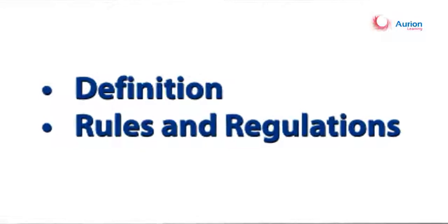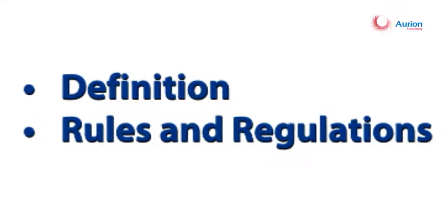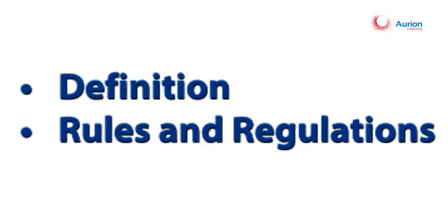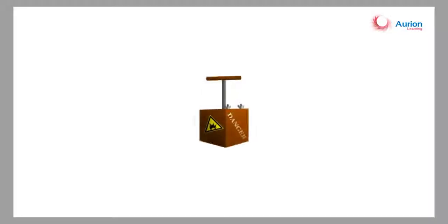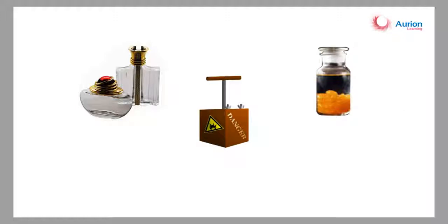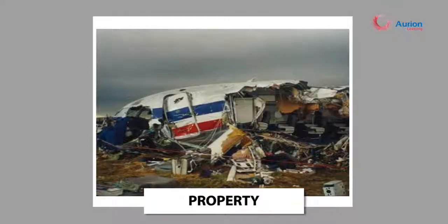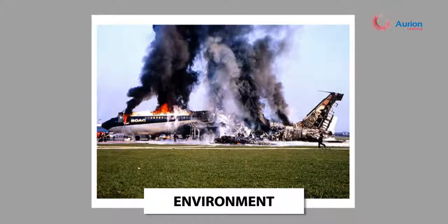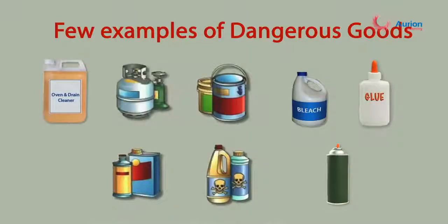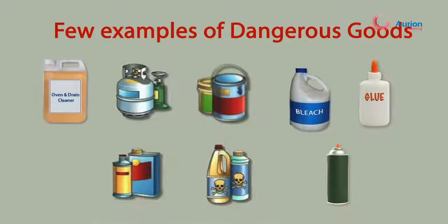Let's start with our first module which will cover the definition of dangerous goods, why there are rules and regulations for the safe transportation of dangerous goods by air, and who defines them. Dangerous goods are articles or substances which are capable of posing a risk to health, safety, property or the environment. A few examples of dangerous goods are pesticides, petrol, paint, gas cylinders, oven and drain cleaners, bleach, glues, and aerosols.